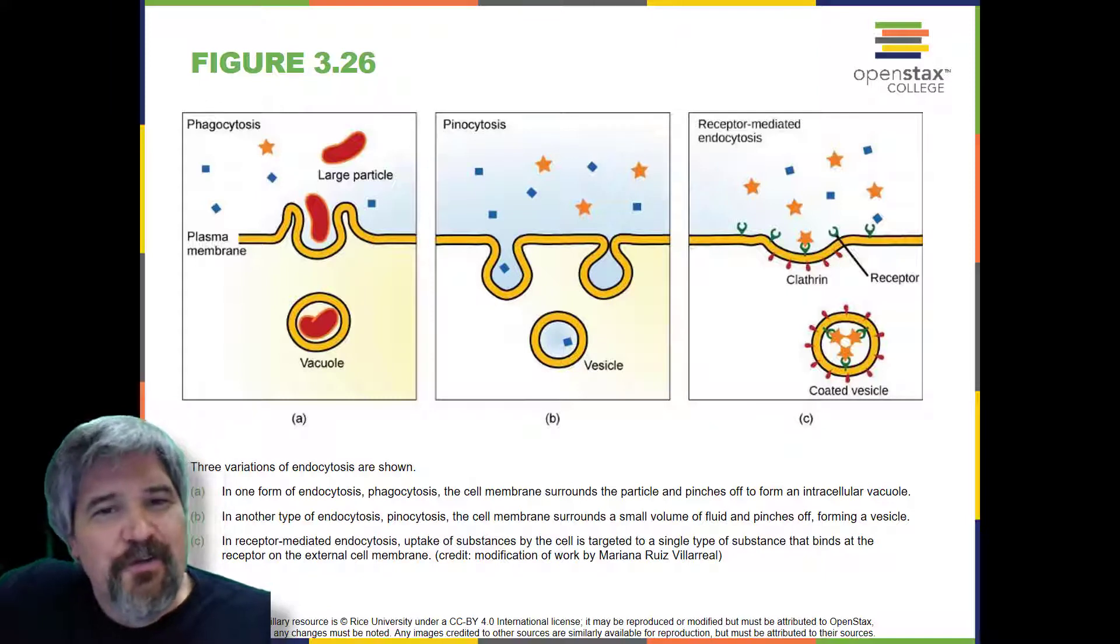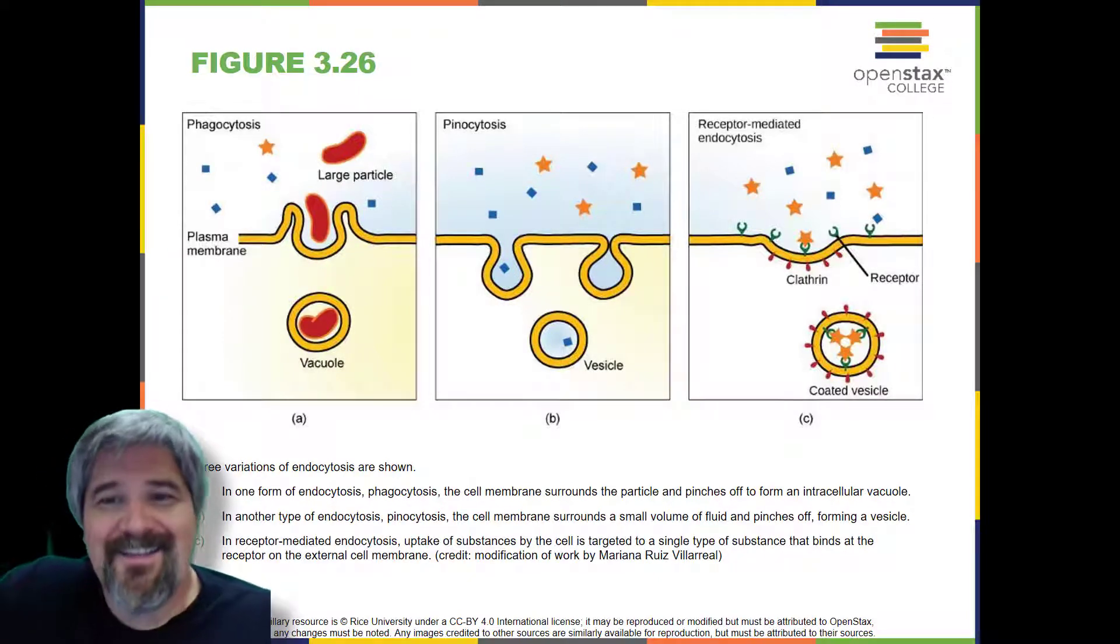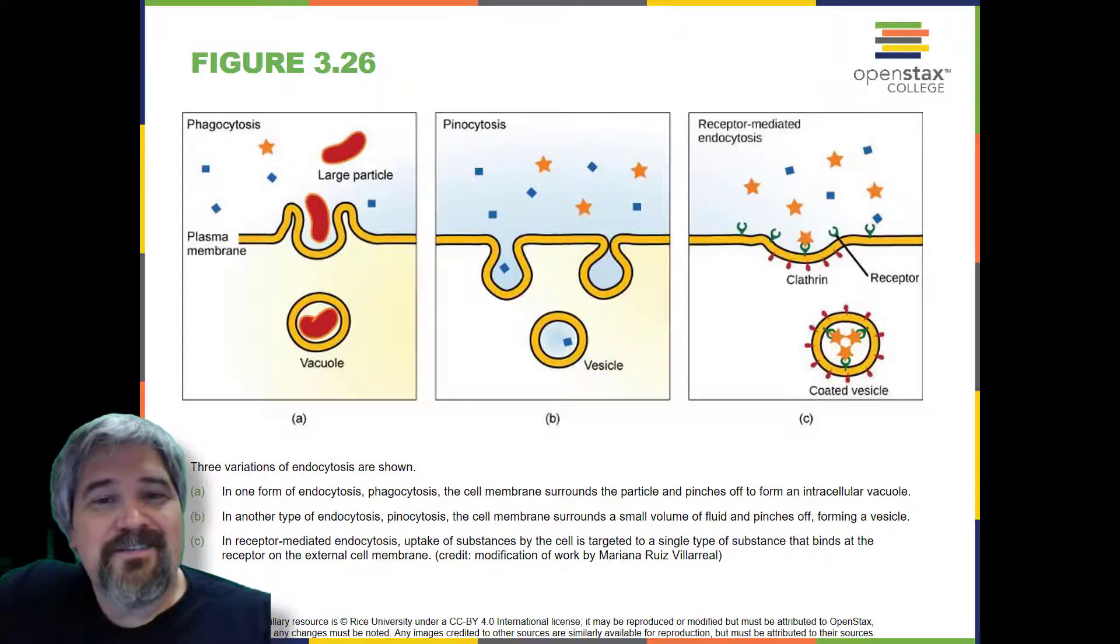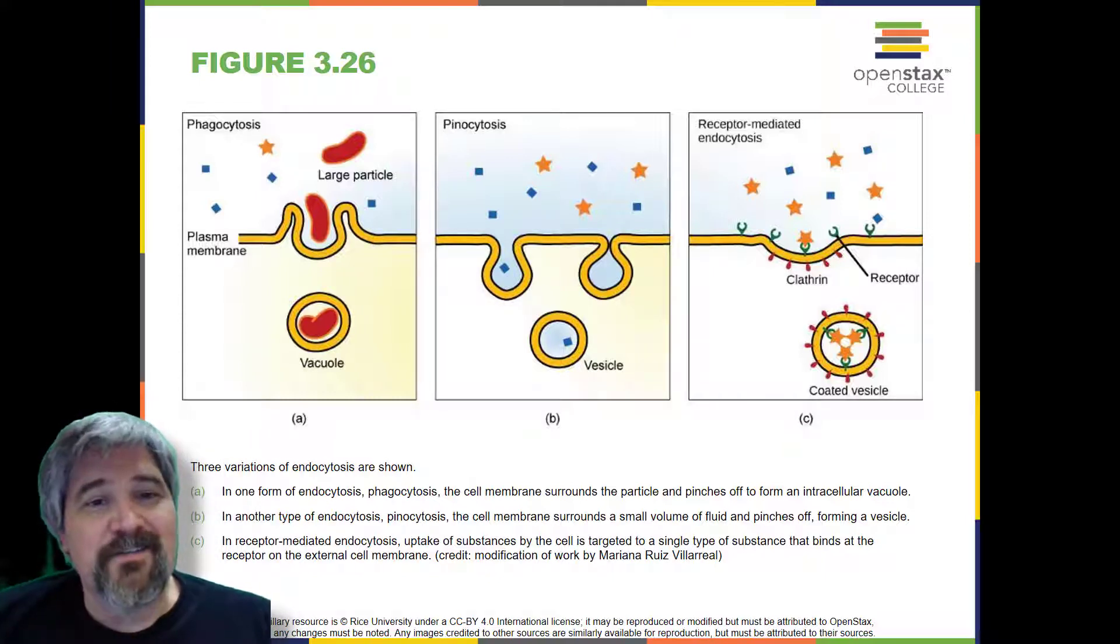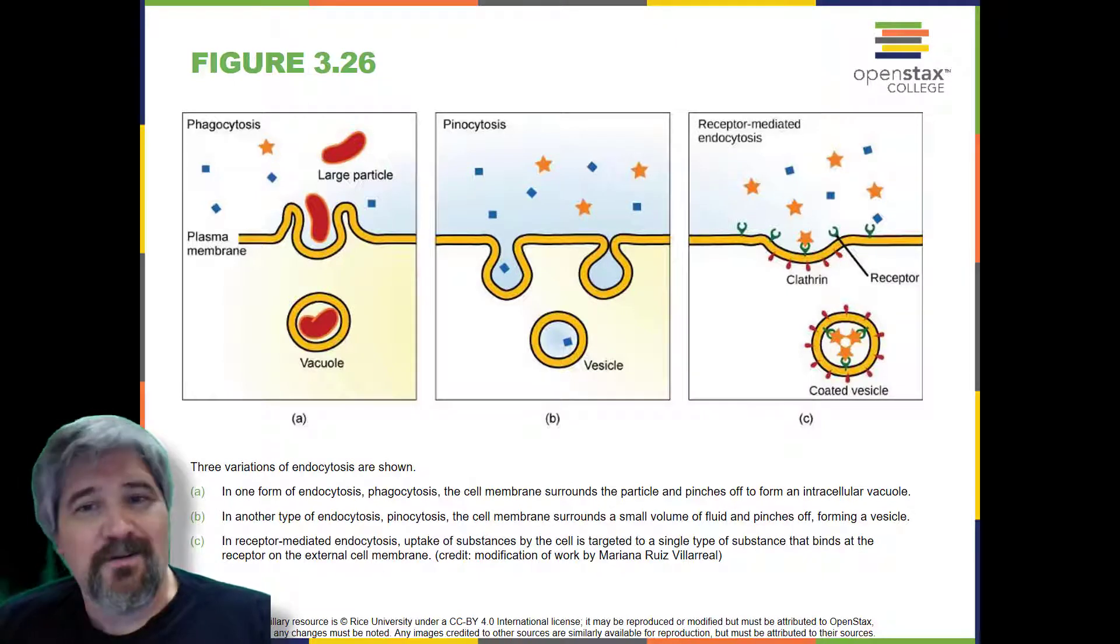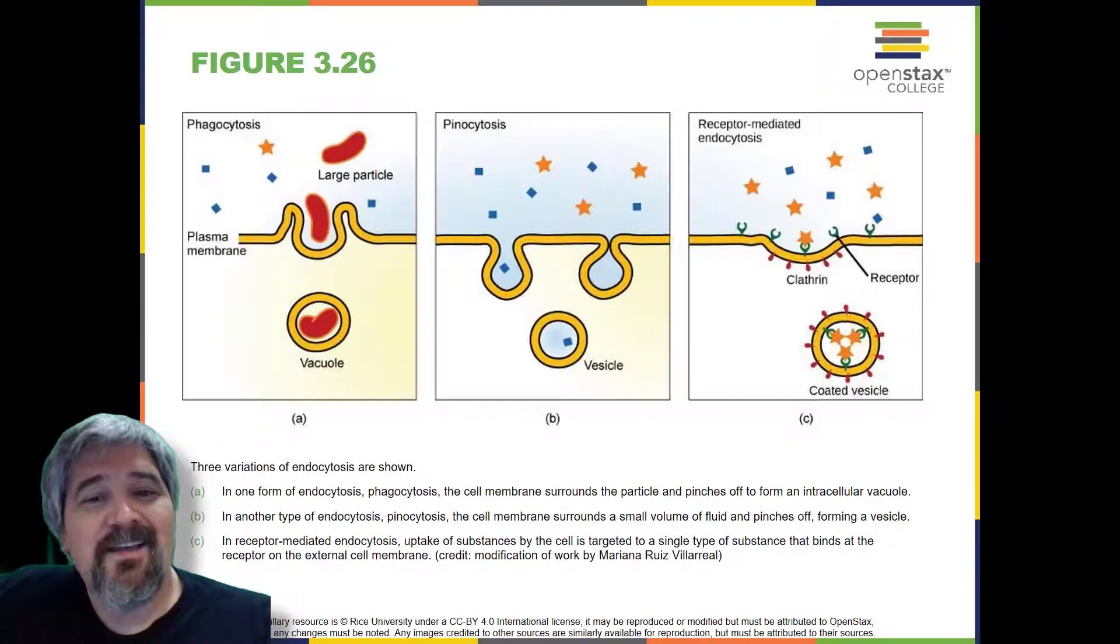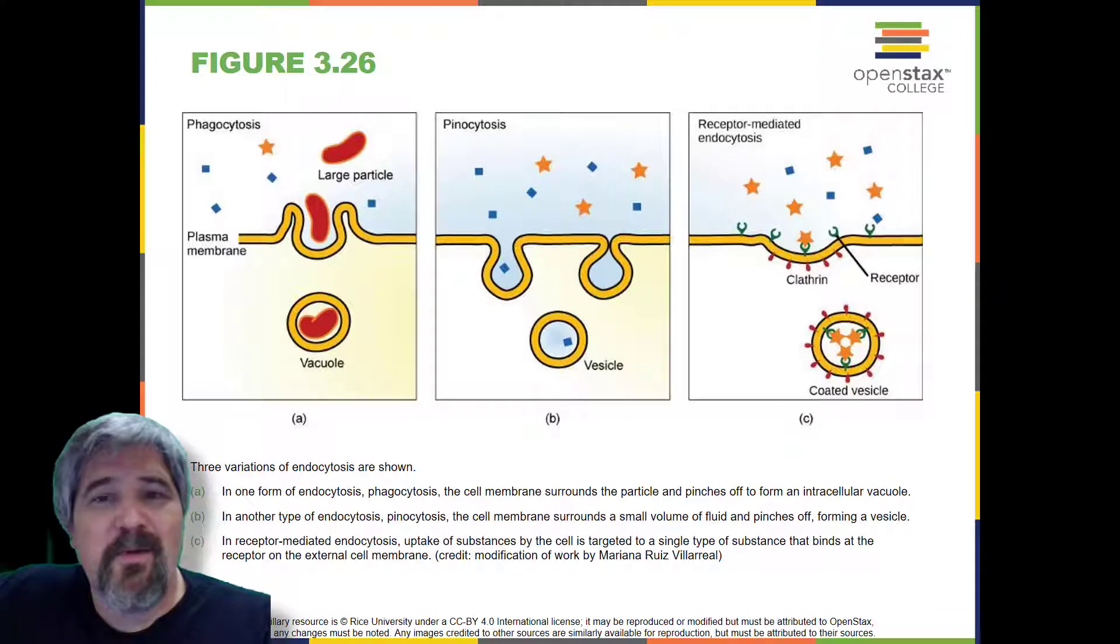Endocytosis. Endocytosis is a type of active transport that moves particles such as large molecules, parts of cells, and even whole cells into a cell. There are different variations of endocytosis, but all share a common characteristic. The plasma membrane of the cell invaginates, forming a pocket around the target particle. The pocket pinches off, resulting in the particle being contained in a newly created vacuole that is formed from the plasma membrane.